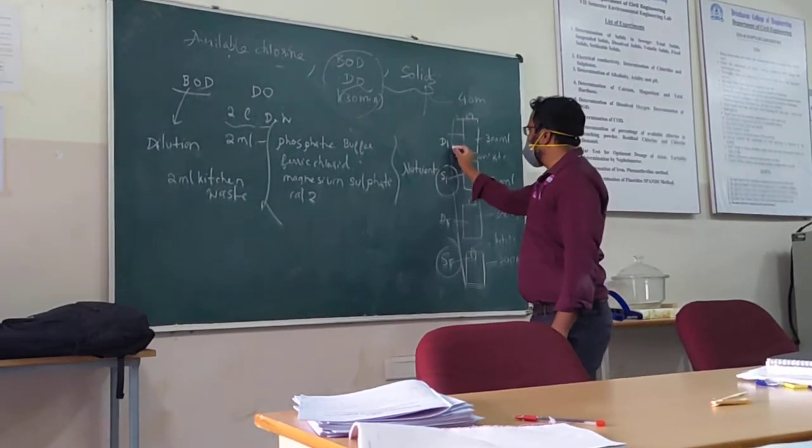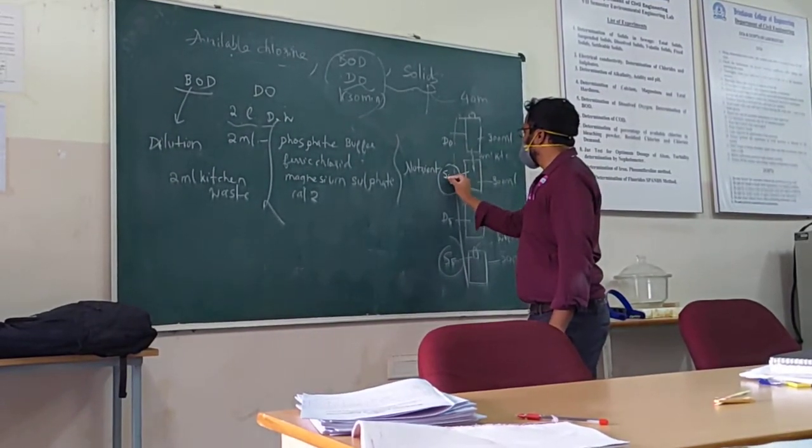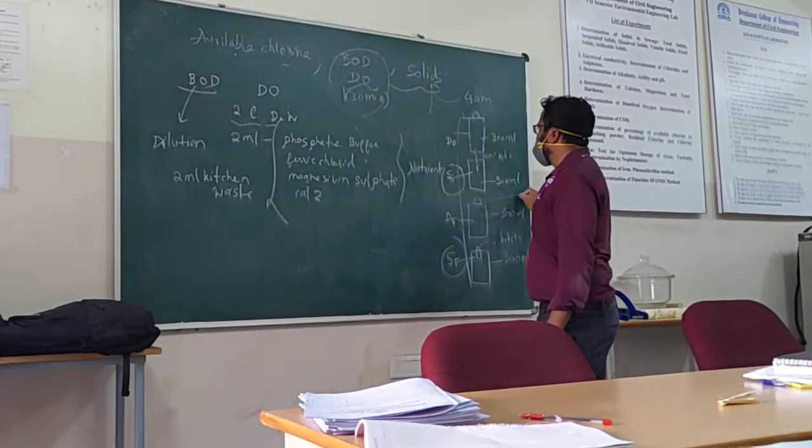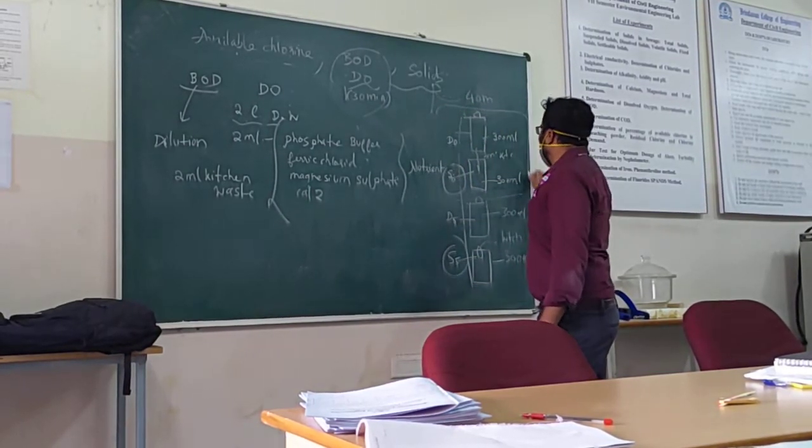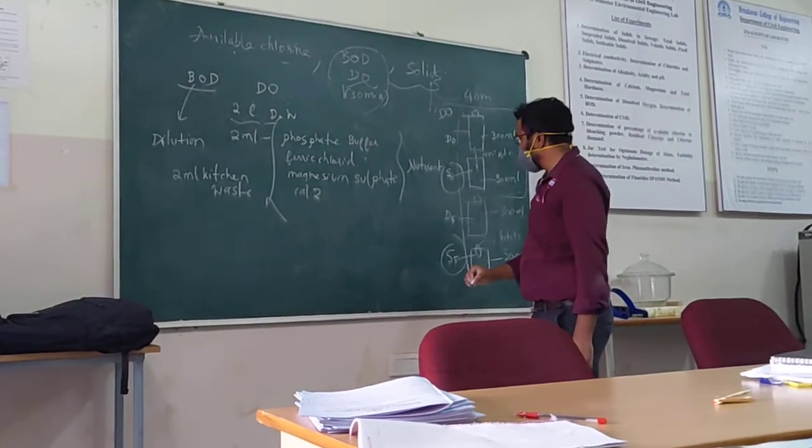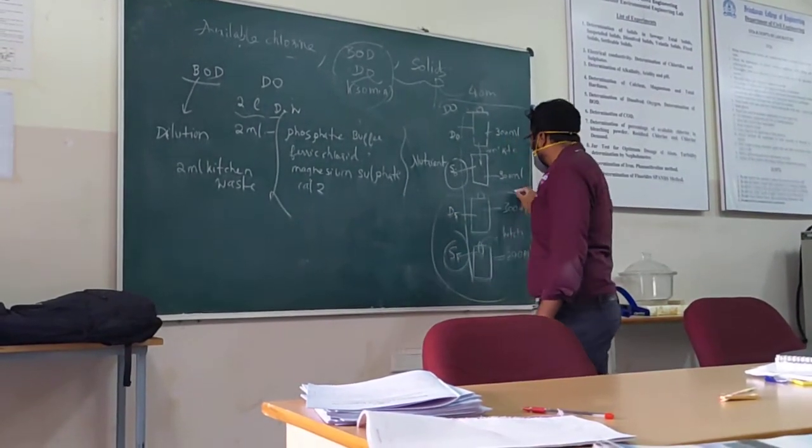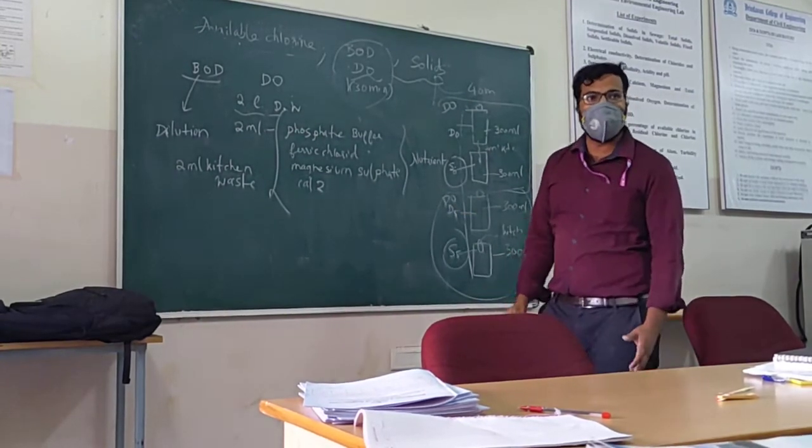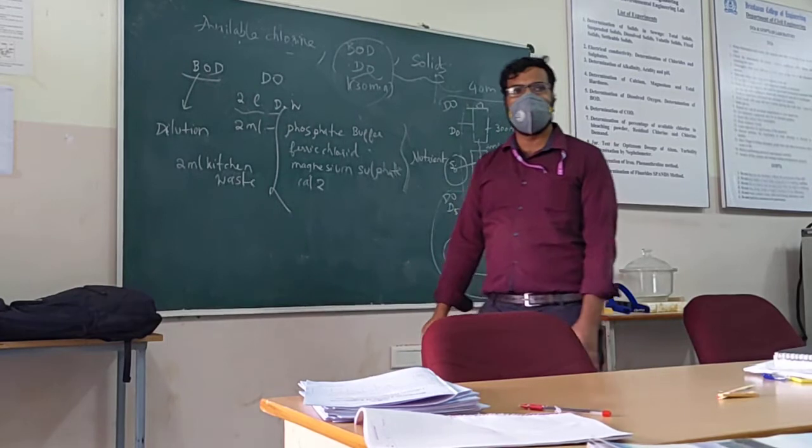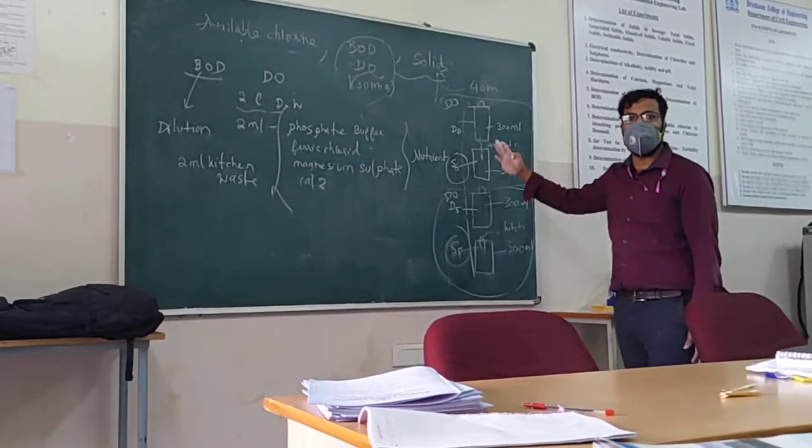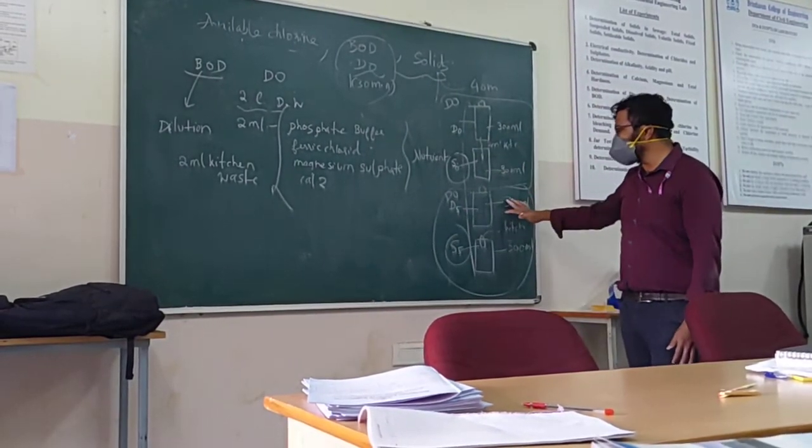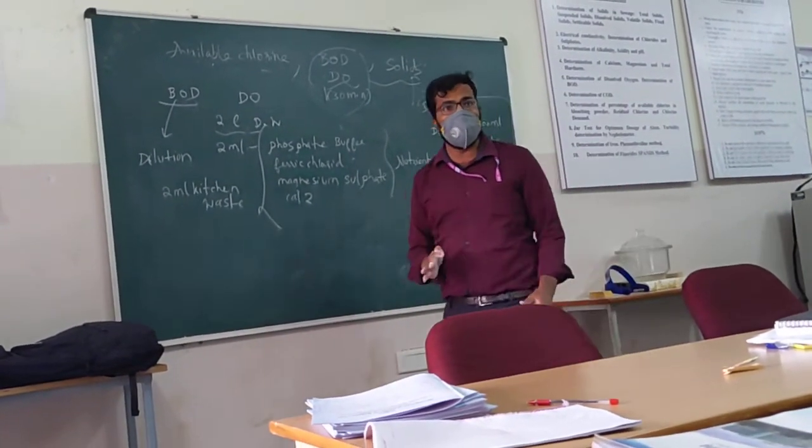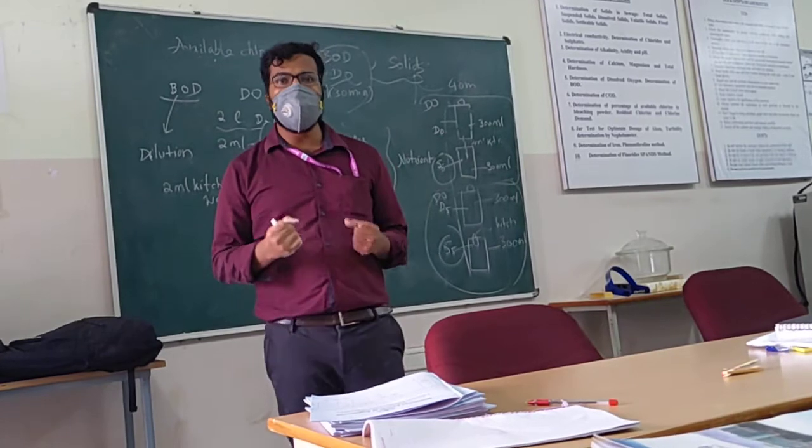So this is your 0th day and this is 5th day. These two things we will measure the DO for today. This again we have to test after 5 days. Again we have to conduct the DO experiment. So when we calculate, you will find the difference in the output. Obviously here, because of the 5 days we are waiting, microbes will start consuming all the oxygen.